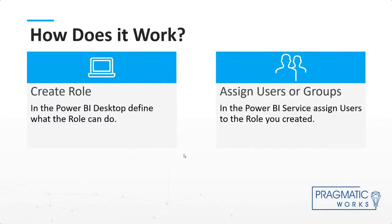How does row-level security work? It's always a two-step process. Step one: you create a role in Power BI Desktop. Step two: you assign users or groups of users to that role in the Power BI service. Regardless of how simple or complex your row-level security settings are, it's always these two steps — you cannot get around this.